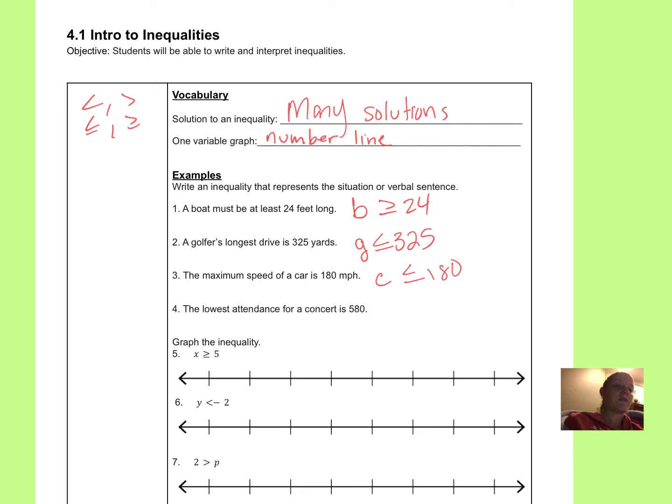The lowest attendance. So the lowest the attendance is 580. That means it could be 580, 581, 582, and so on. So it's bigger than, but it could be exactly 580. So attendance has to be bigger than or equal to 580. And in all these cases, it just happens to be that that number is included, but that's not always going to be the case.